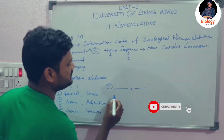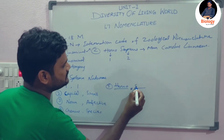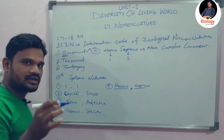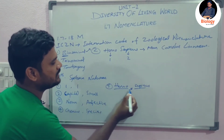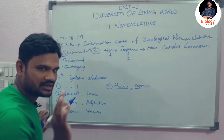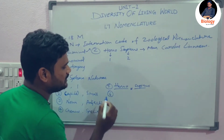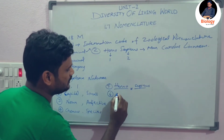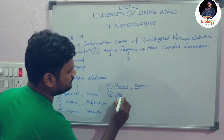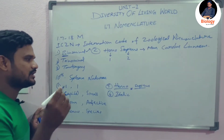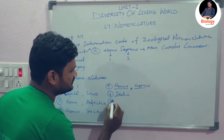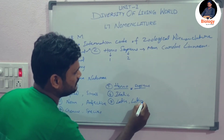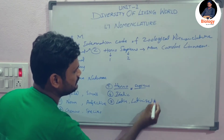For example, imagine 'Homo' and 'Sapiens' — when writing with a pen in a notebook, we have to underline the two words separately. This is also a rule. The next rule is: we have to write this name in italic form. And another rule is: this name should be in Latin or Latinized form.